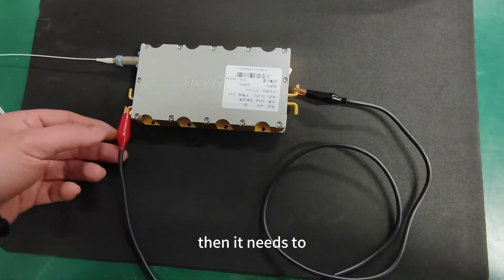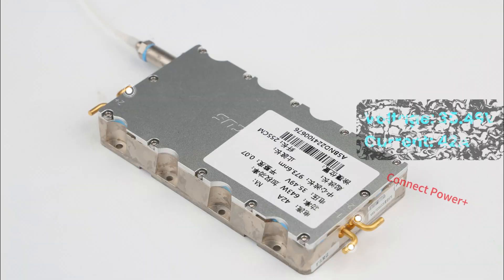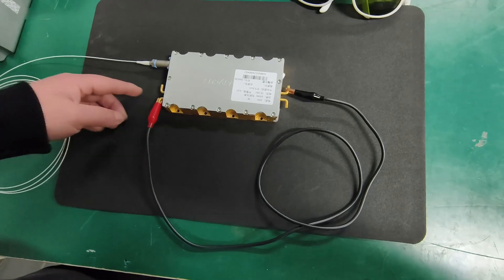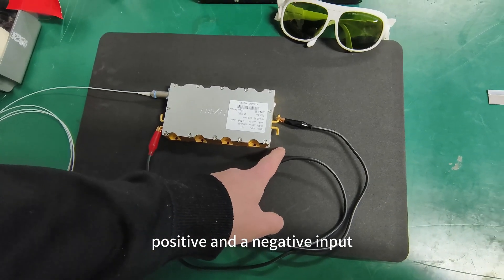Then it needs to short connect its two positive and two negative before it is powered on. The pump is then pumped with a positive and a negative input.